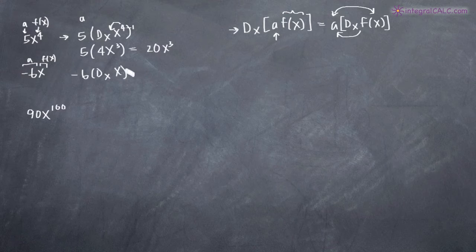Well, the derivative of x is just 1. So we end up with negative 6 times 1 which of course just simplifies to negative 6.